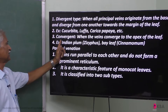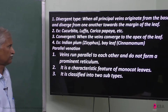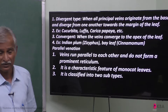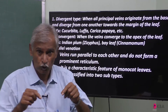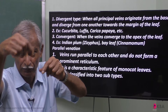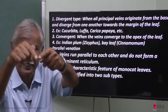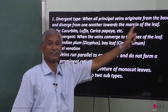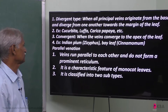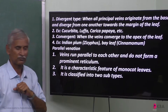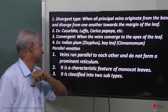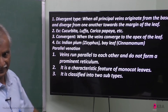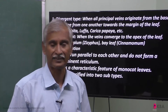Now, convergent: the main veins converge to the upper parts of the leaf. Examples of the convergent type are Indian plum and bay leaf.